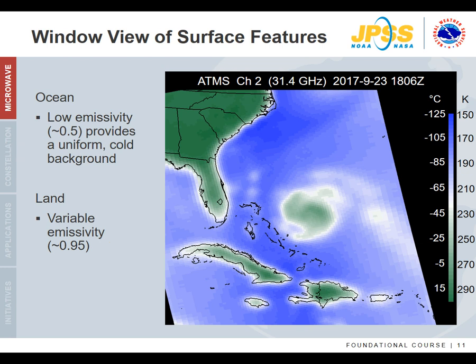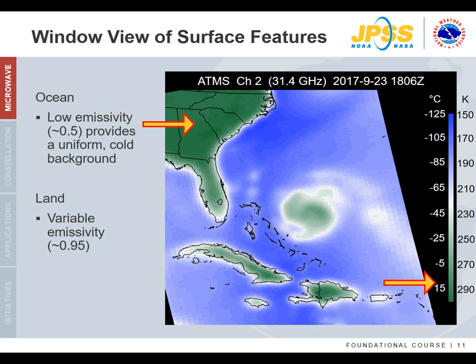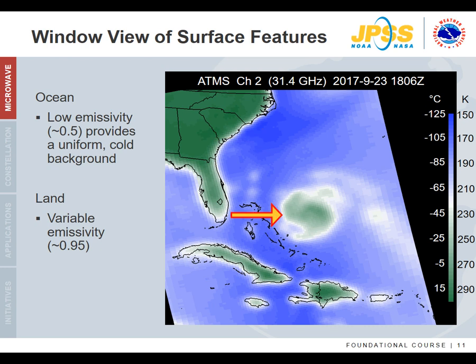Notice the temperature range from 150 to 300 Kelvin and where those values are located. From a normal IR perspective this may not make sense, but if we look at a land surface with a value around 300 K and an emissivity of 0.95, the sensor-observed temperature will be about 285 K — within the ballpark of what we see over land. For an ocean surface using 300 K and an emissivity of 0.5, the sensor-observed temperature would be 150 K, matching the coldest blue values over the ocean. The warm green blob over the ocean is Hurricane Maria.